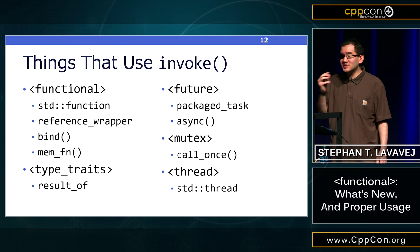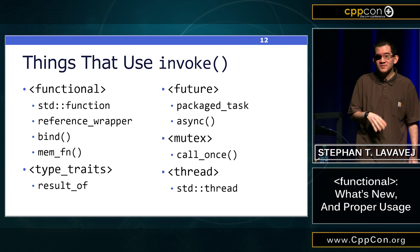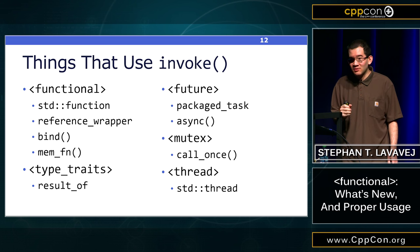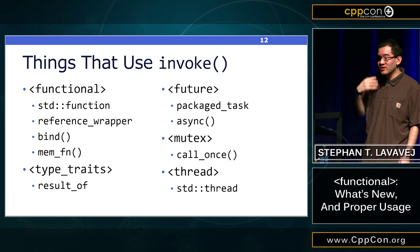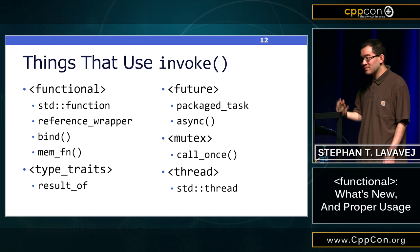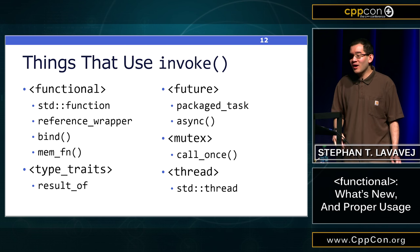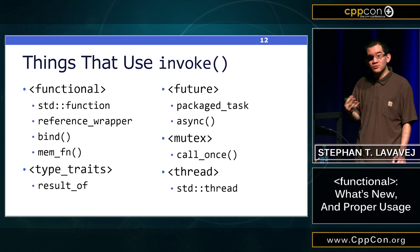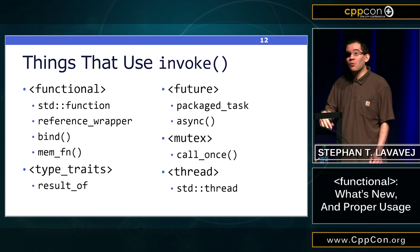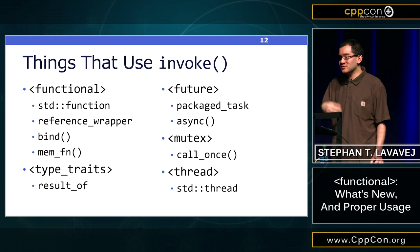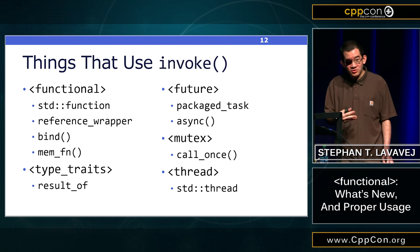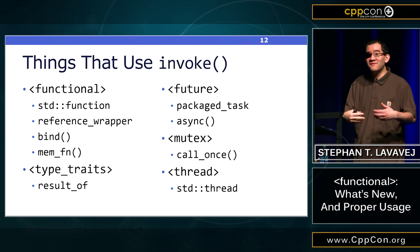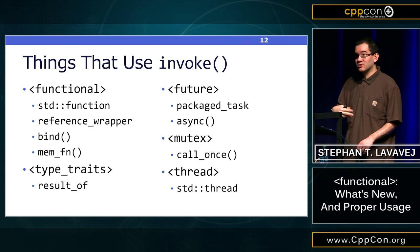Invoke is necessary because going all the way back to C++11, many things in the standard library use invoke. Here's an exhaustive list of everything in the STL that uses invoke — it's a lot of stuff. The things in the multi-threading headers also use invoke, so once you know you can use PMFs and PMDs this way, you can give them to things like call_once or std::thread and because they follow the invoke protocol, it'll just work.